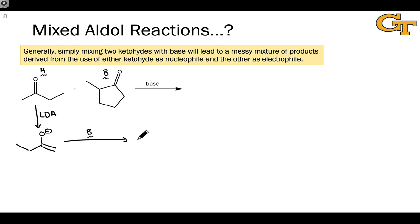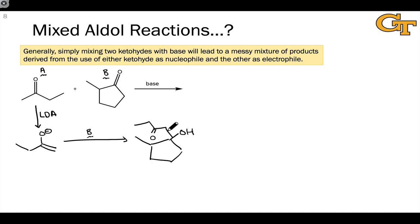Let's draw that out quickly to make this discussion fairly concrete. After acidic workup, we would end up with something like this — addition of the alpha carbon of methyl ethyl ketone, the methyl alpha carbon, to the carbonyl carbon of the cyclopentanone starting material. Let's say this is what we want to happen. Will this actually take place?